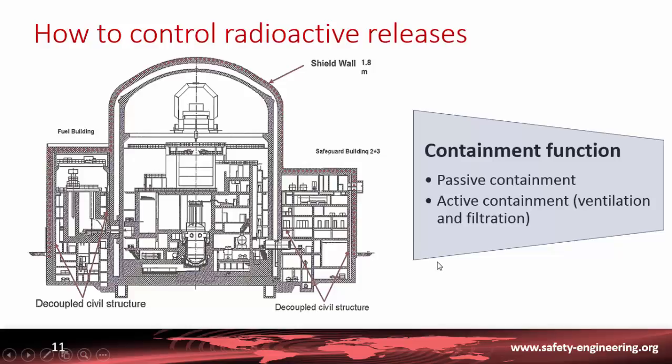So any leakage occurring through the first containment is taken with this ventilation system and filtered before release. So these are the three main safety functions that should be ensured permanently: control of the reactivity, control of the cooling, and control of the containment.